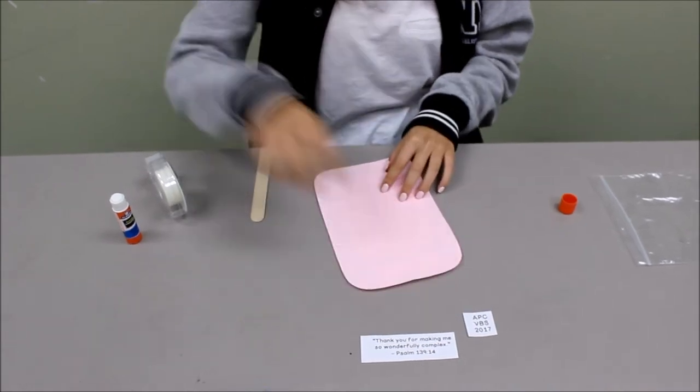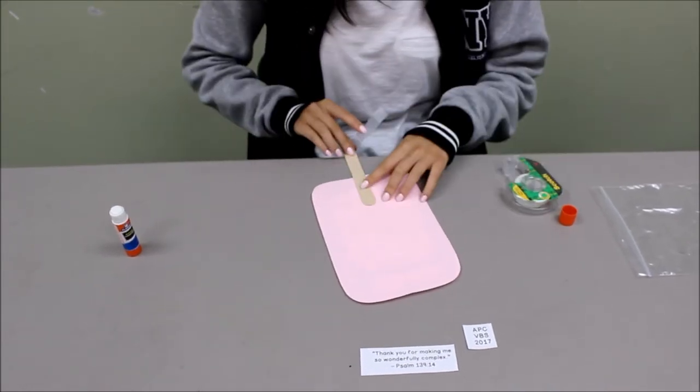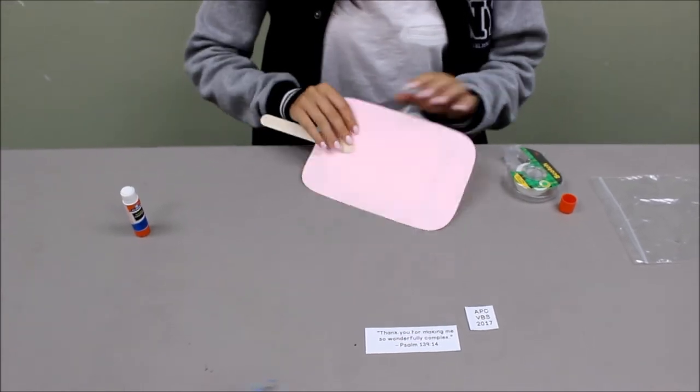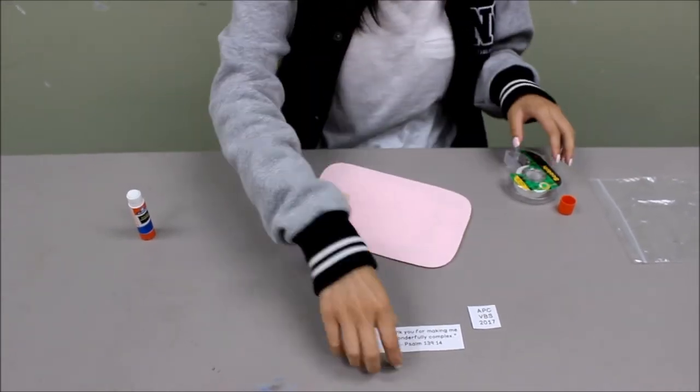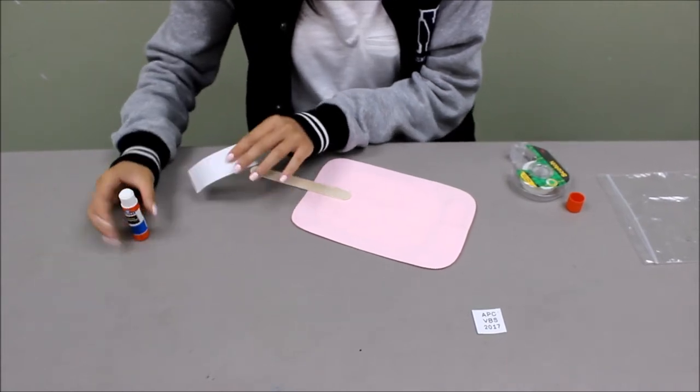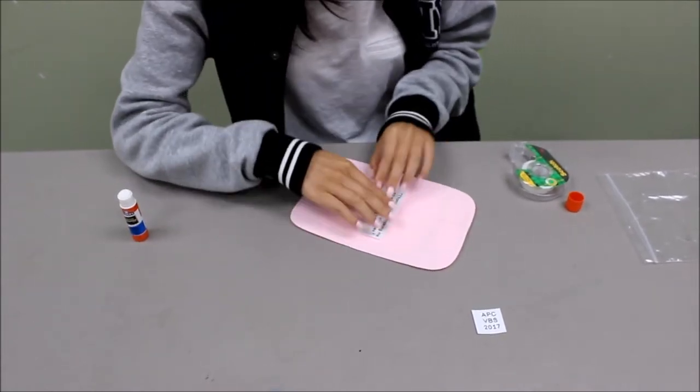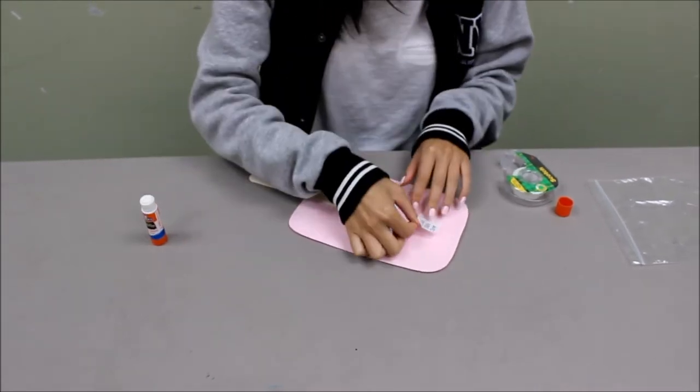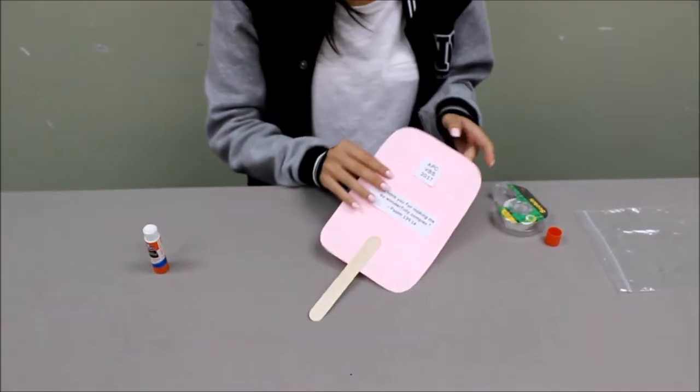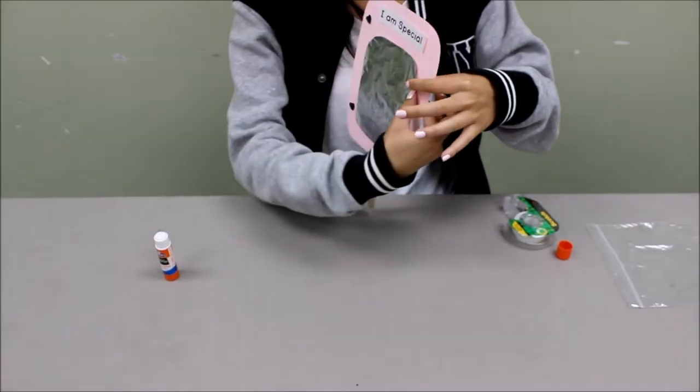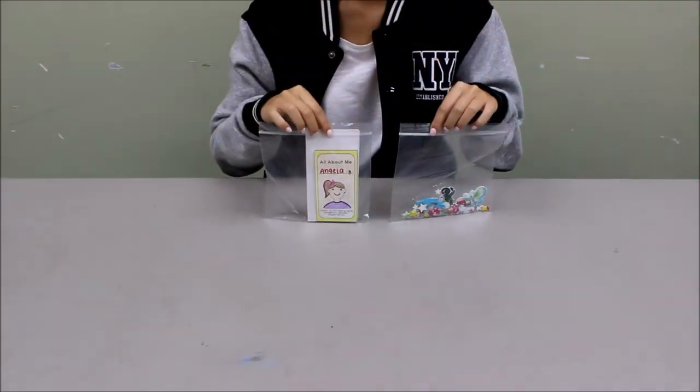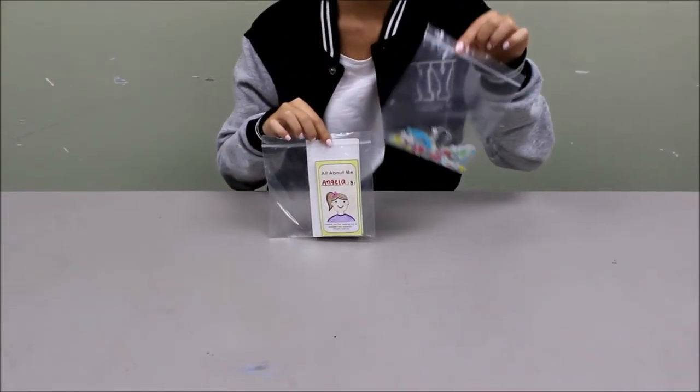Next, they will take a roll of tape to tape on the back of the stick. Crew leaders should help students with the tape. Lastly, students will glue on the Bible verse and APCVBS 2017 sign. When they are done, it should look something like this.